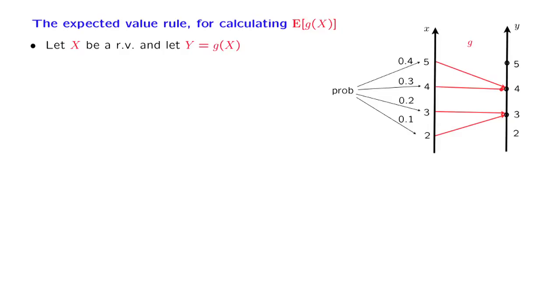The only tool that we have available in our hands at this point is the definition of the expected value, which tells us that we should run a summation over the y-axis. Consider different values of y, one at a time, and for each value of y, multiply that value by its corresponding probability.